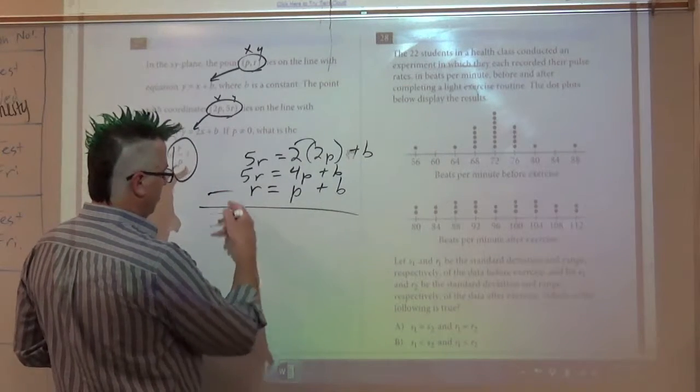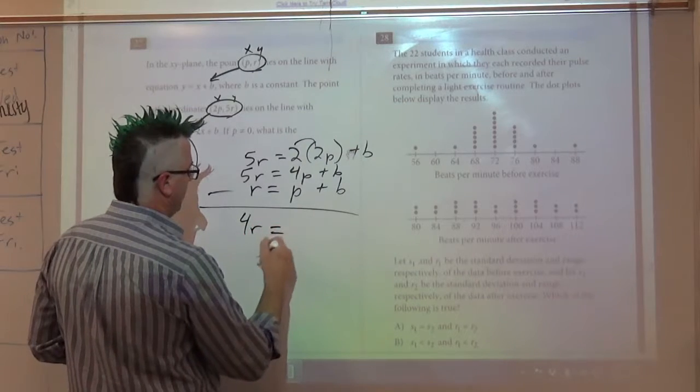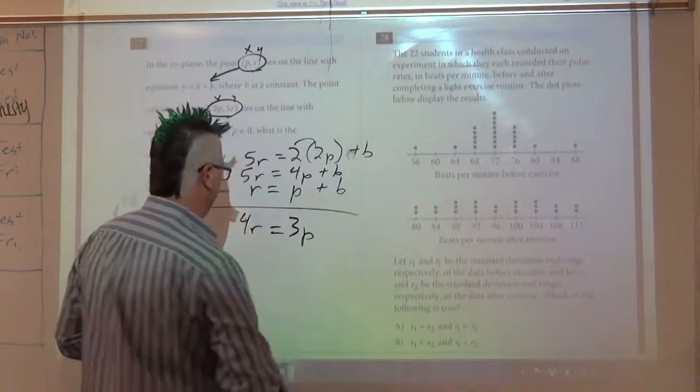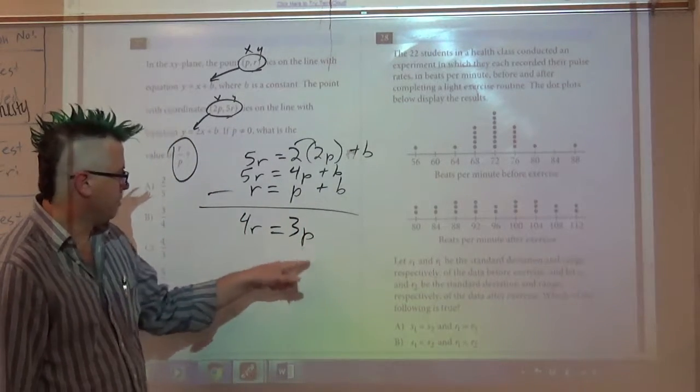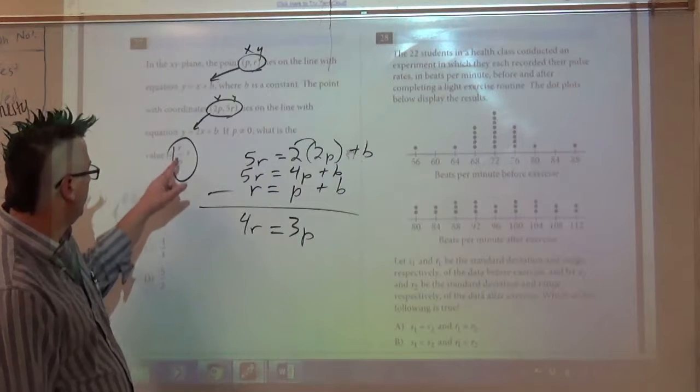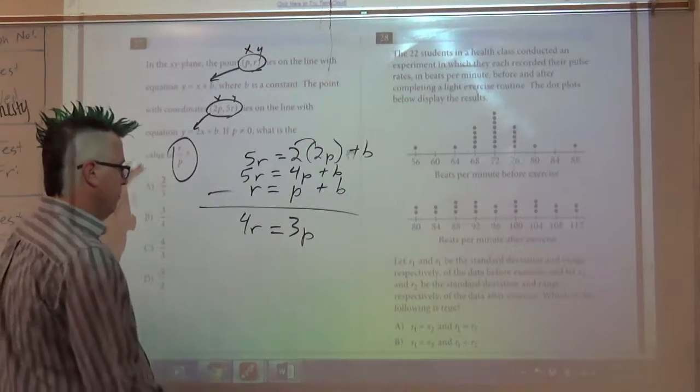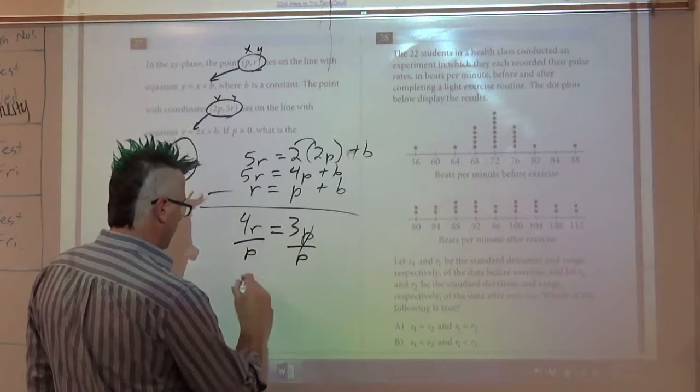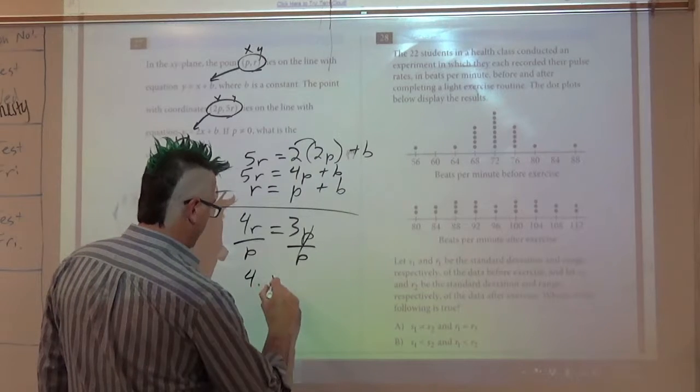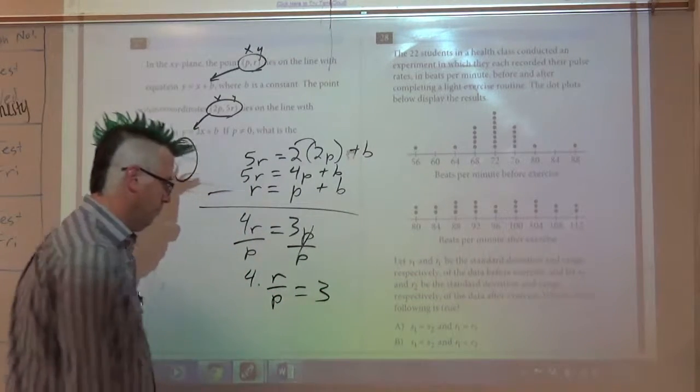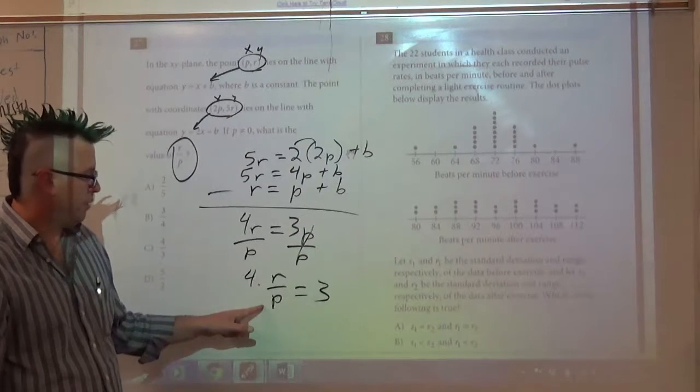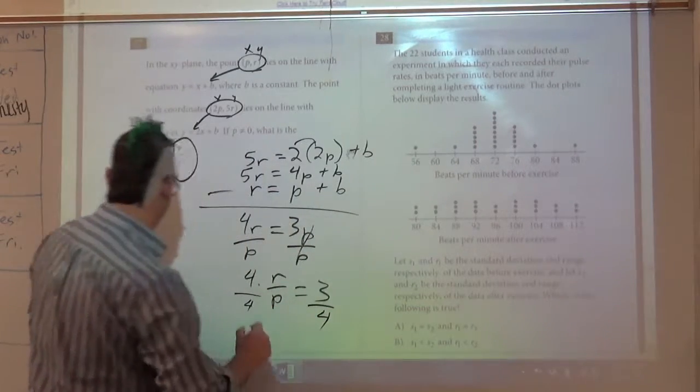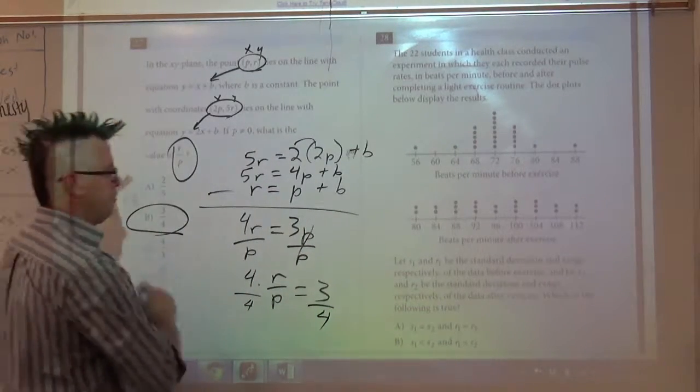So 5R minus R, I get 4R. 4P minus P, I get 3P, and my B's are gone. So now I just have R's and P's. We're getting it. We need to get R divided by P, so I'll divide by P on both sides. So 4 times R over P equals 3. And now to get R divided by P by itself, divide by 4 on both sides. And my answer is B, 3/4.